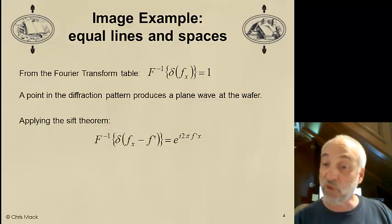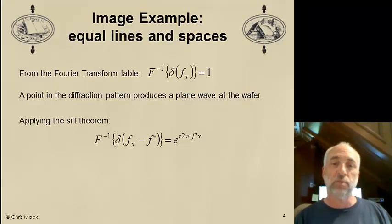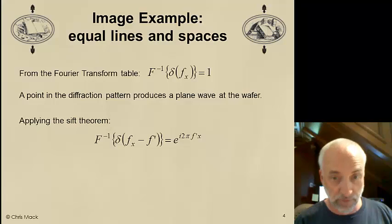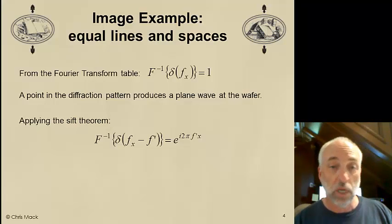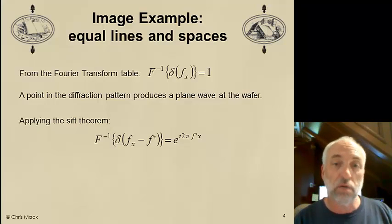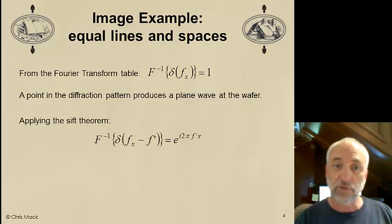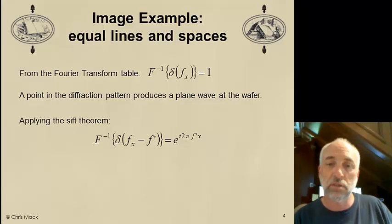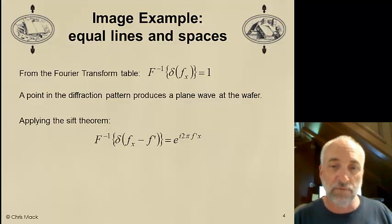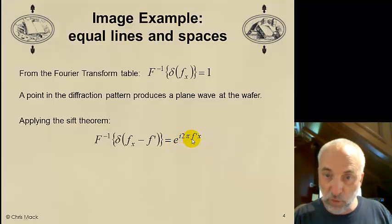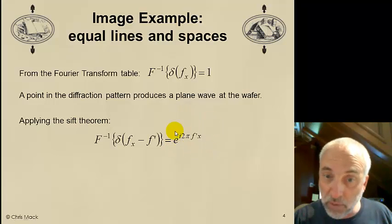That allows us to apply the shift theorem. And the shift theorem for the Fourier transform is one of the Fourier transform properties that we talked about last time. And in the homeworks, you'll have to prove the shift theorem. And here's the answer. The inverse Fourier transform of the delta function shifted by some frequency f prime becomes e to the i 2 pi f prime x. Well, that is a plane wave.